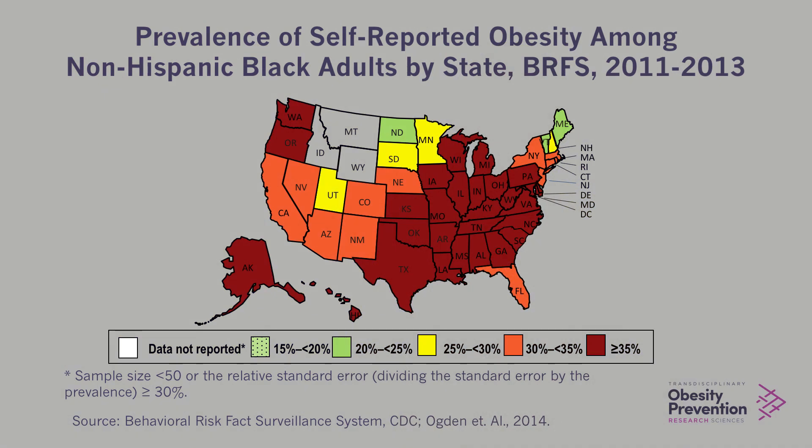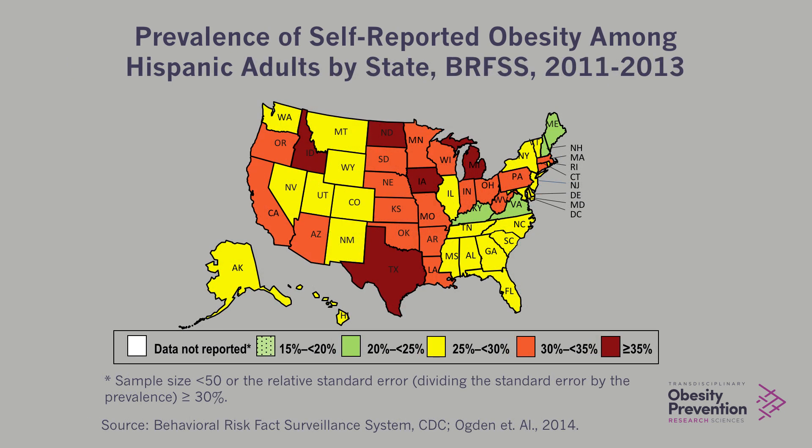What is even more concerning is when we look at what's going on in terms of patterns geographically across the U.S., but then drill down further to specific racial and ethnic groups. When we look at current statistics from the CDC for non-Hispanic Blacks, we see overwhelmingly that greater than 35% across almost all states are considered obese — based on their self-reported height and weight used to measure BMI. This is very concerning when we think about what group should we be targeting and focusing on.